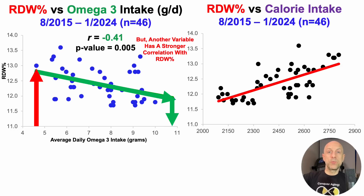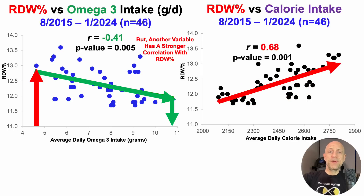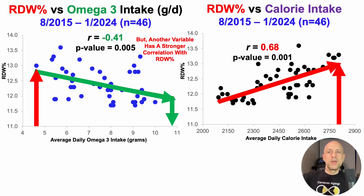However, another variable has a stronger correlation with the RDW percentage — and that's calorie intake. With RDW percentage on the y-axis and average daily calorie intake on the x-axis, there is a significant positive correlation, with a correlation coefficient of 0.68 compared to negative 0.41 for daily omega-3 intake. The p-value in both situations is less than 0.05. When calorie intake is relatively higher, that's significantly correlated with a higher RDW, and when calorie intake is lower, that corresponds to a lower RDW percentage.